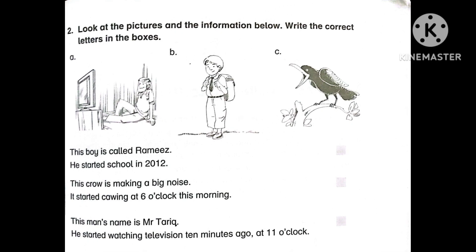Number Two: Look at the picture and the information below. Write the correct letters in the boxes — letters A, B, C are given with each picture and must be placed in the correct box. The statements are: This boy is called Ramiz; he started school in 2012. This crow is making a big noise; it started crying at 6 o'clock this morning. This man's name is Mr. Tariq; he started watching television 10 minutes ago at 11 o'clock. Answers: first box B, second box C, third box A.